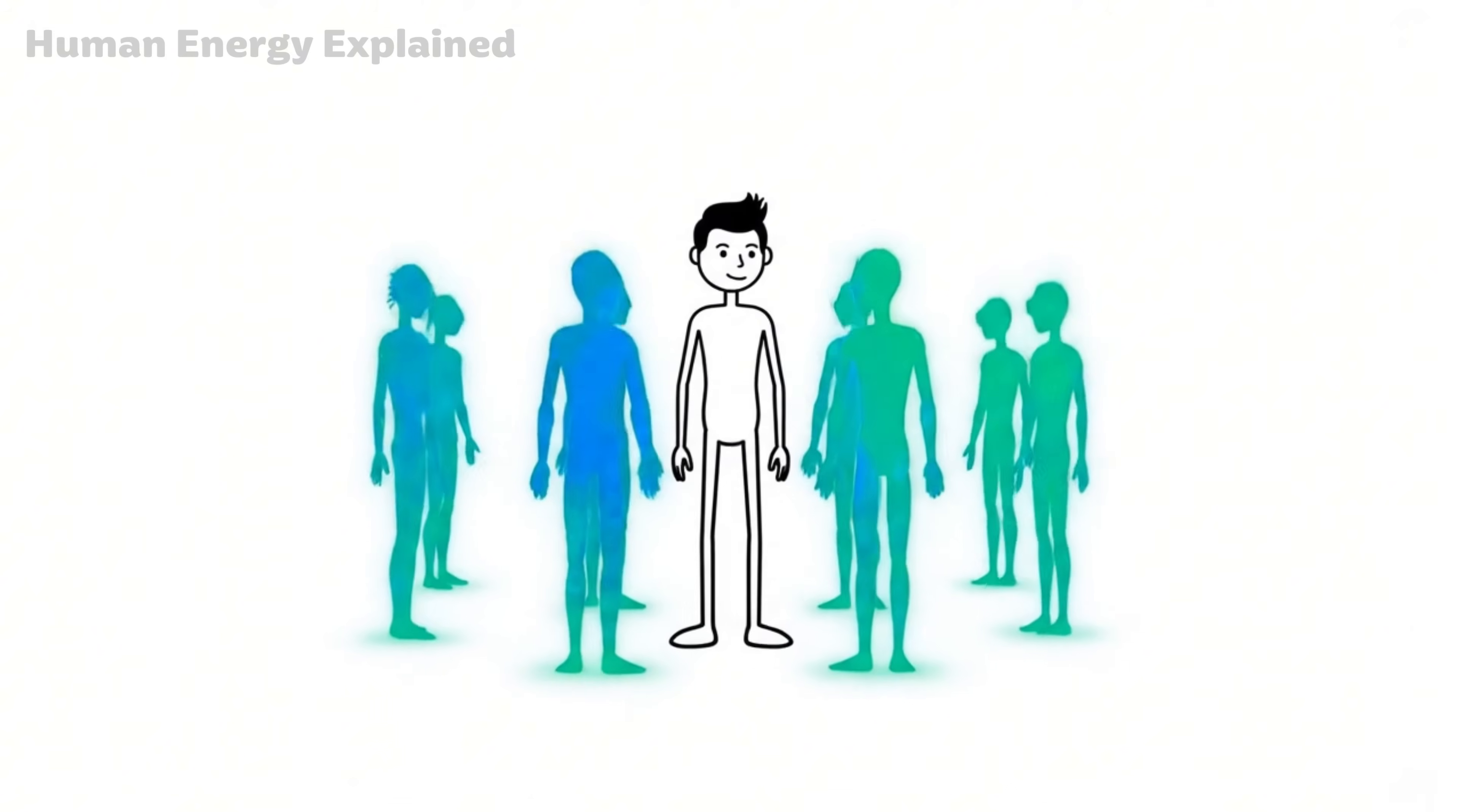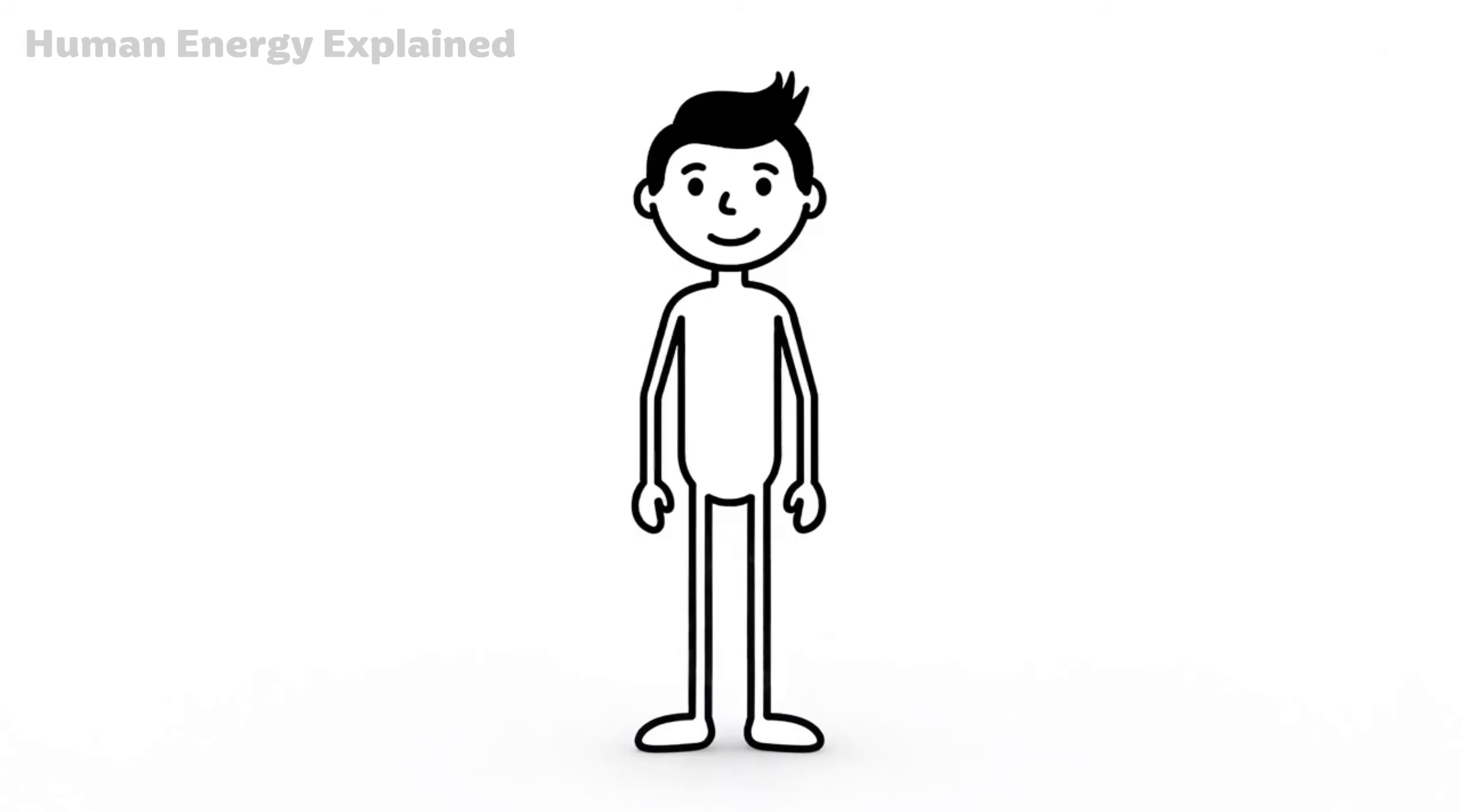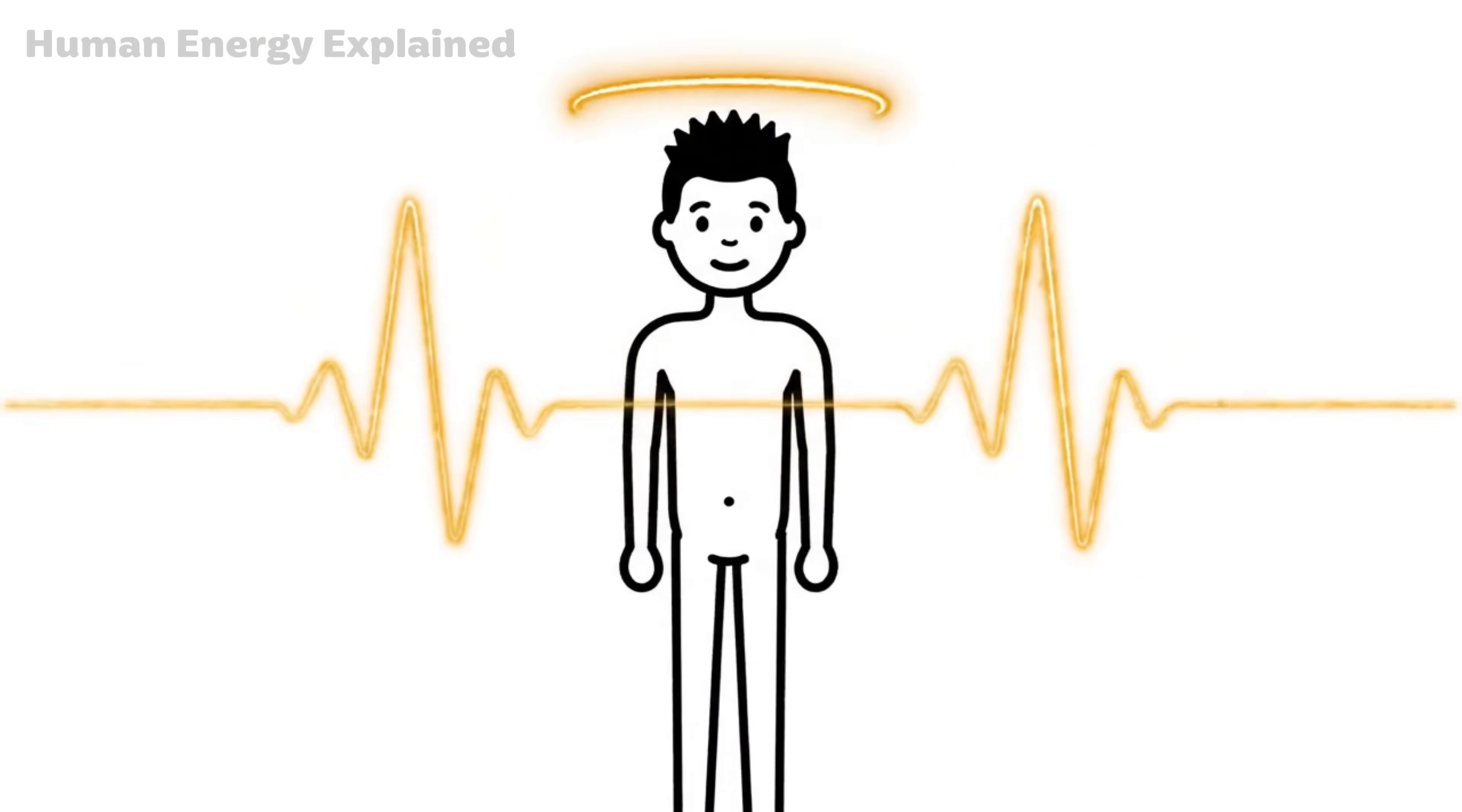But evolution had other plans. Humans who stayed sharp during scarcity survived. Their focus heightened, their senses sharpened, their bodies learned to preserve muscle and burn fat. Those who couldn't adapt didn't pass on their genes. You are the descendant of survivors. Every cell in your body carries code that's been tested across thousands of generations. When you fast, you're not doing something unnatural. You're returning to a rhythm your biology knows intimately.